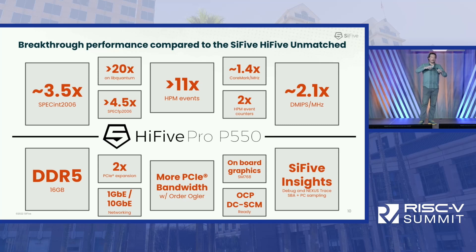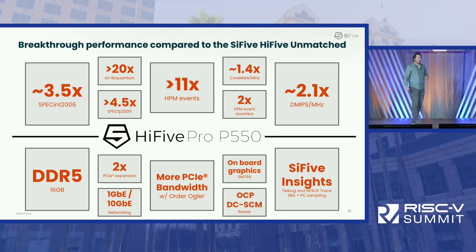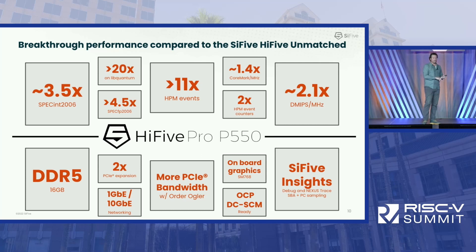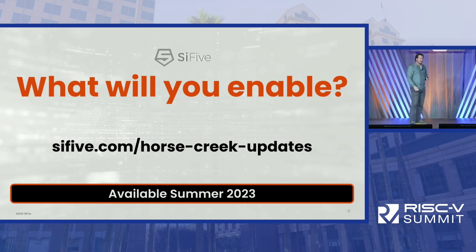When looking at how to optimize software, HPM events give you 11x more events — that's 300-plus within the CPU and caches — coupled with more event counters, giving more visibility into how your software runs on the device. Beyond that, more PCIe bandwidth, onboard graphics so you can connect a USB keyboard, mouse, and HDMI and have a developer machine up and running. Combine that with more PCIe expansion slots, DDR5 faster memory, and OCP-DCSCM ready for remote management in 1U and 2U rack data centers. We're targeting availability in summer of 2023, and the website is available for updates so you can track progress.